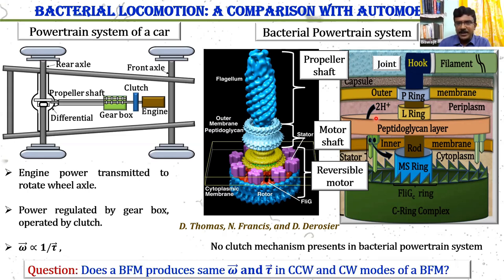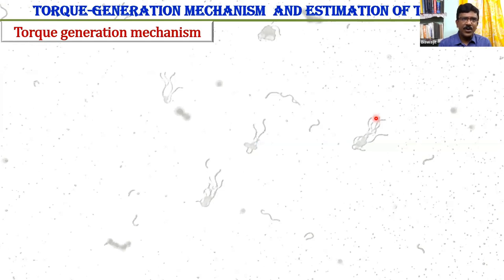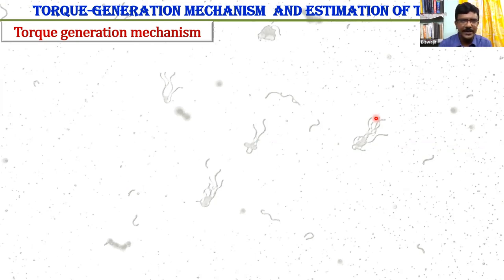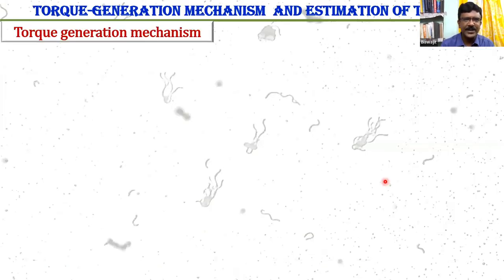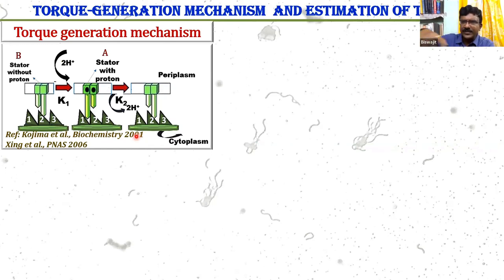The question comes: does the BFM produce the same angular velocity and torque? Before going into a rigorous discussion, I will briefly discuss the torque generation mechanism. You can see the protein responsible for torque generation. The outer surface of the motor, the C-terminal domain, is composed of the C-terminal domain of FliG protein, called FliGC, which makes contact with the stator.